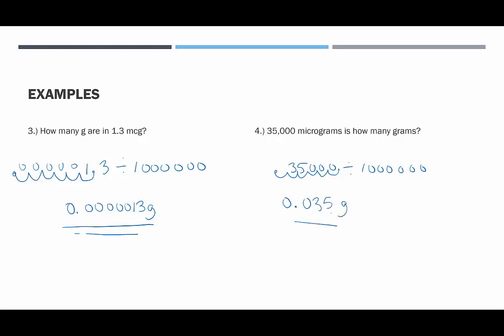These have been examples of converting from micrograms into grams by dividing by one million, or moving the decimal point six places to the left. Thank you for stopping by.